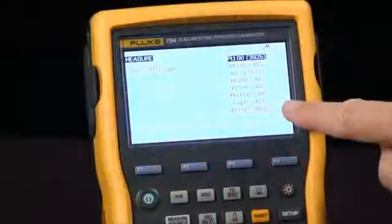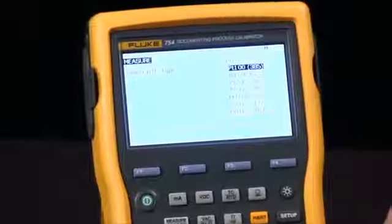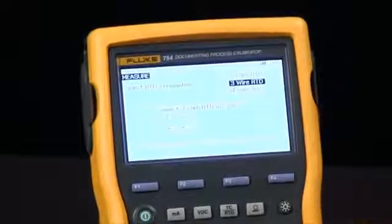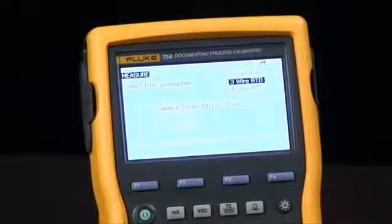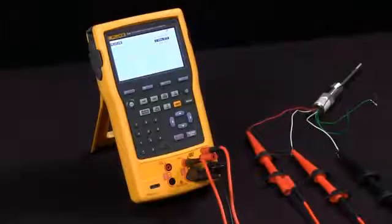Then we get a choice of different types of RTDs. I'm going to select Platinum 100 ohm. Now we have the screen that shows us how to connect the two, three, or four wire RTDs.